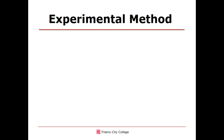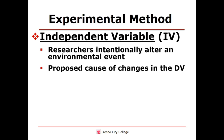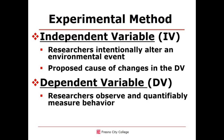Let's review the basic definitions of independent and dependent variables more explicitly. The independent variable is the environmental event that the researchers intentionally alter. It is the proposed cause of behavior — the proposed cause of changes in the dependent variable. The dependent variable is the observed and measured behavior, the proposed effect of the altered independent variable. Pause the video now if you need time to study these definitions before going on.